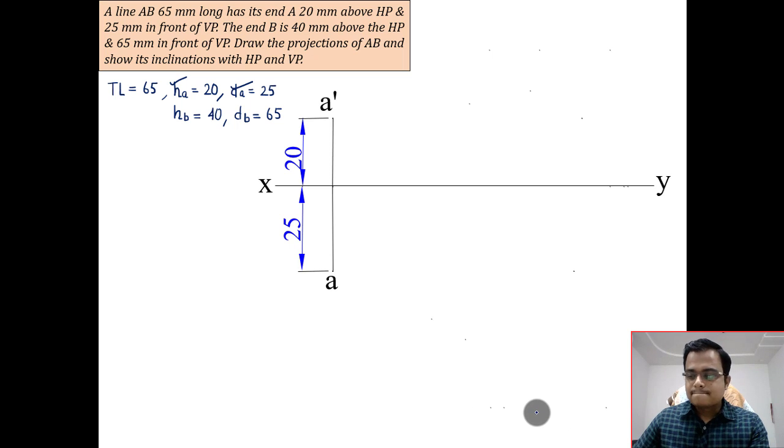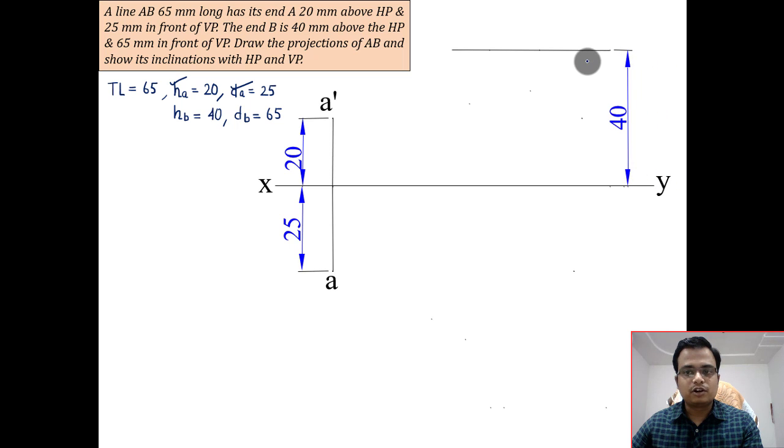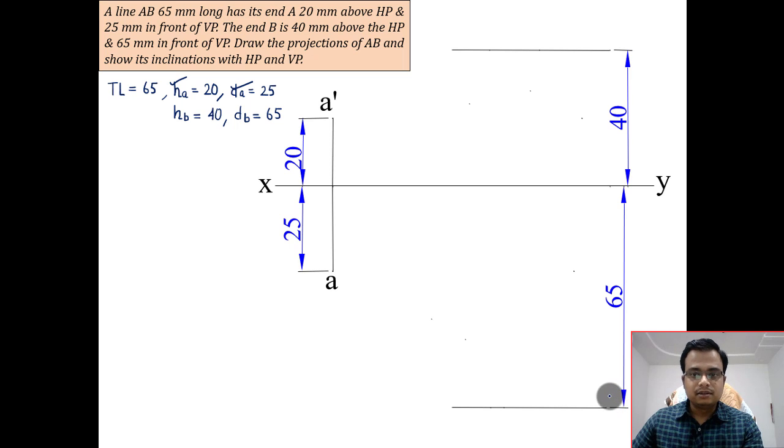We know very well that point B is at a height of 40 mm, so make a construction line this way. In the same manner, point B should be 65 mm away from the vertical plane in the top view. This distance has to be taken from the reference line.